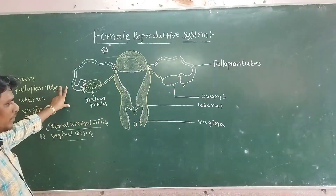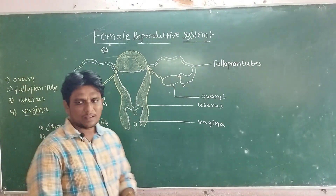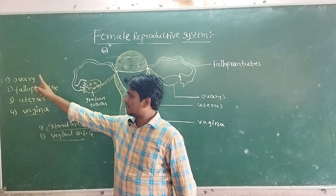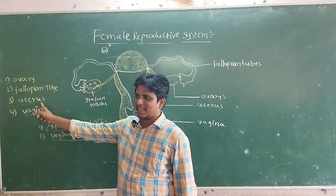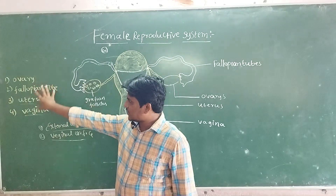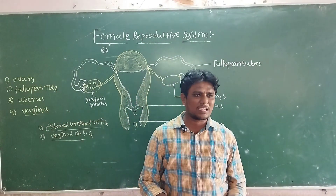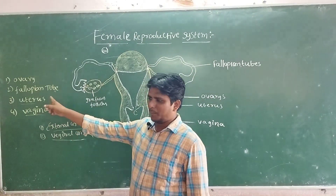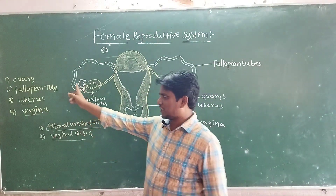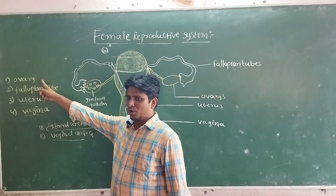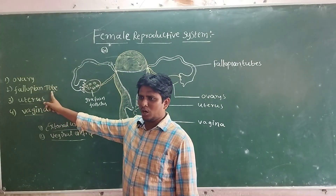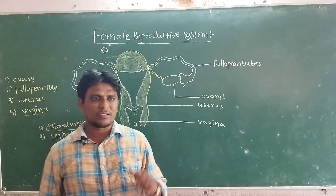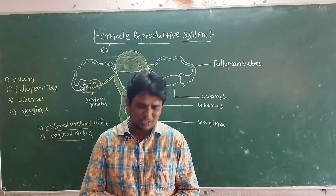The Female Reproductive System has four parts: a pair of ovaries, Fallopian tubes, uterus, and vagina. These four parts are collectively known as the Female Reproductive System.